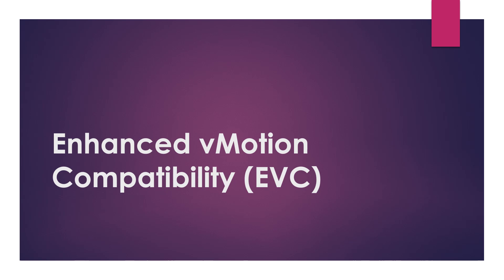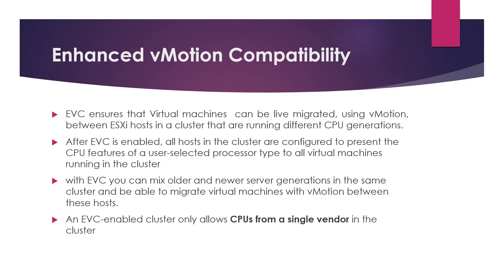Enhanced vMotion Compatibility, or EVC, is a feature that ensures servers with different CPU generations can coexist in a single cluster. After EVC is enabled, all hosts in the cluster present CPU features of a user-selected type to all virtual machines running in the cluster.